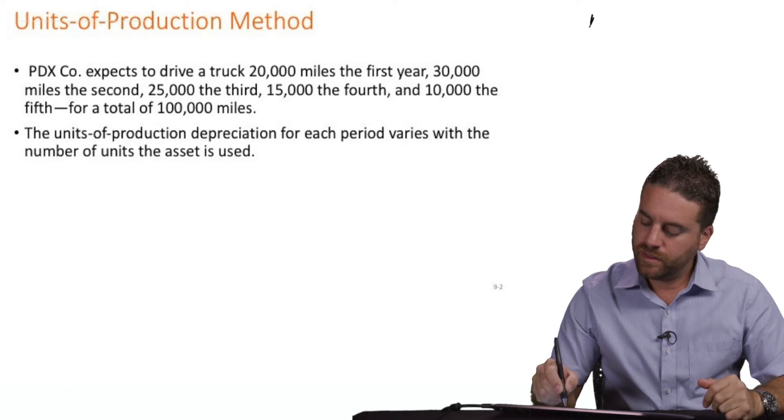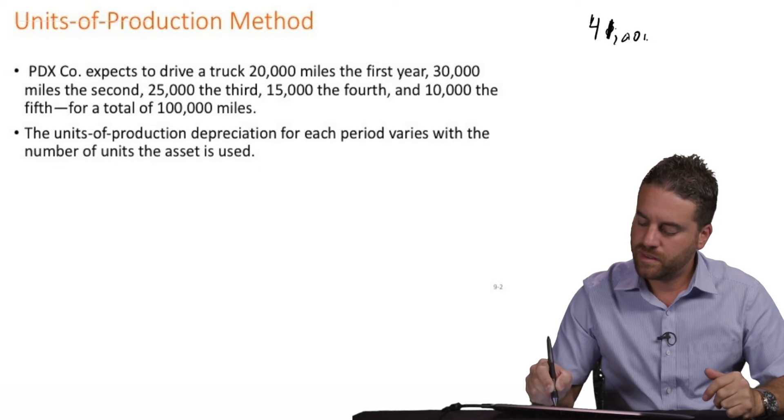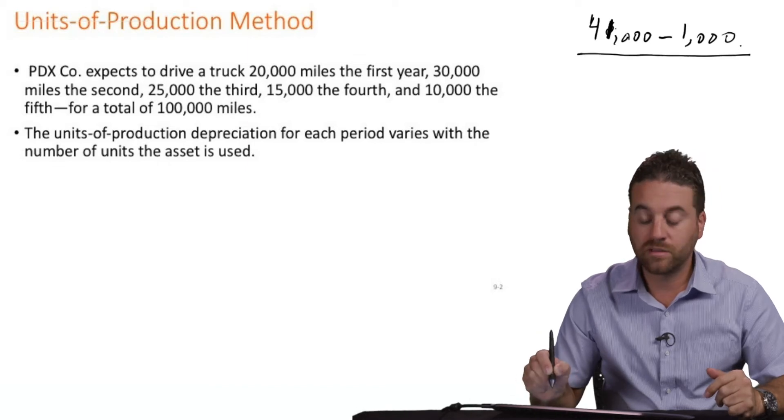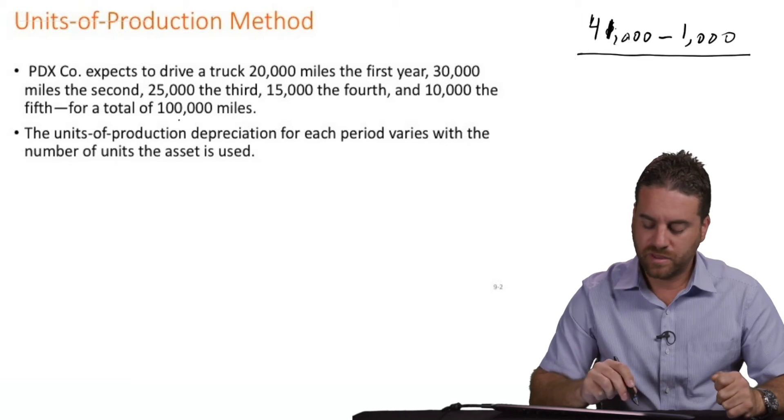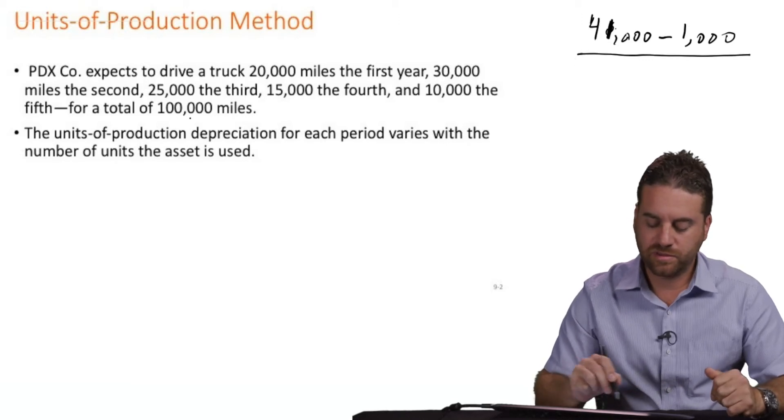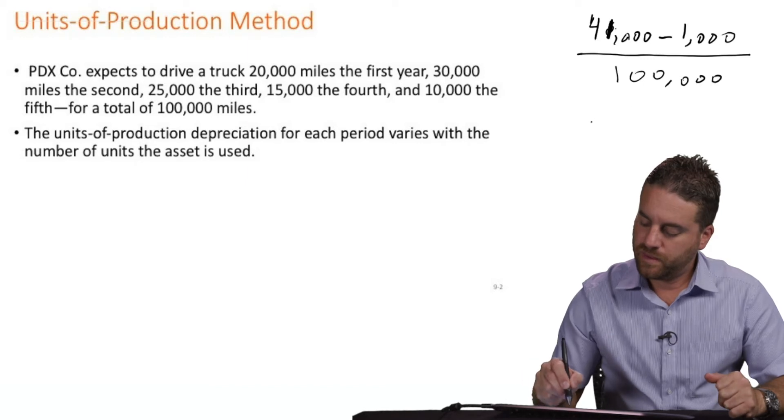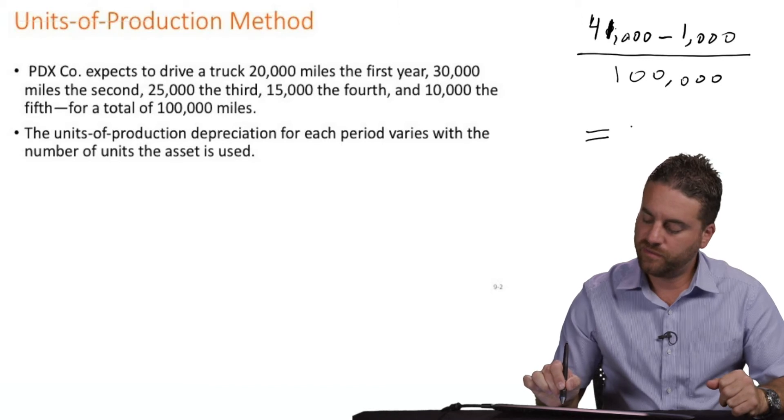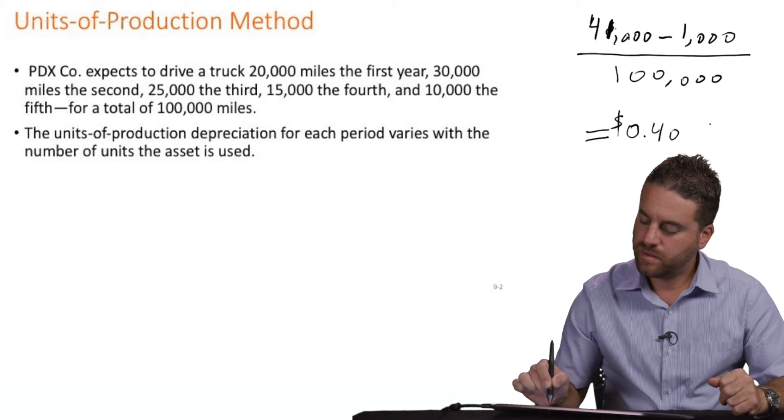So the historical value or the purchasing value was, sorry, it was 41,000. And then we subtracted the residual value of 1,000 and we divided that by the total units. So if we look at the total units, it's 100,000. It's technically the 20 plus 30 plus 25 plus 15 plus 10. That is 100,000. So 40,000 divided by 100,000, that gives me 40 cents per mile.